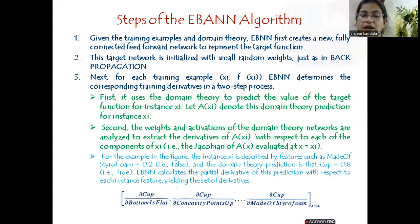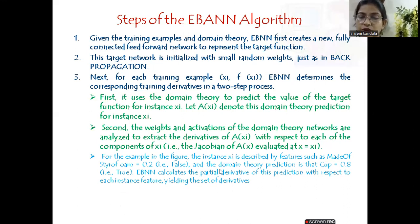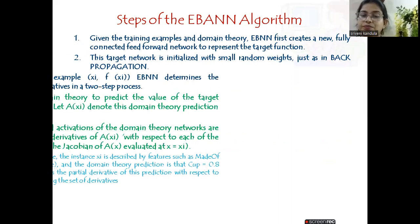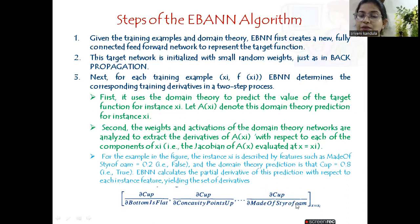We want the final outcome to be 'cup'. So we perform a derivative: d(cup)/d(bottom is flat), and with respect to each feature we perform a derivative. The features include: bottom is flat, concavity points up, expensive, fragile — totally 12 attributes. Cup has to be partially differentiated with respect to all 12 attributes and the final outcome taken. All these partial derivatives are evaluated at x = x_i. This matrix is called the Jacobian. The function has multiple output units and the gradient is computed — the partial derivative is nothing but the gradient.